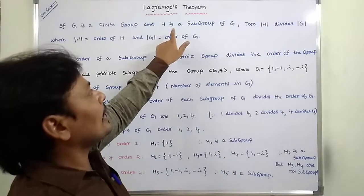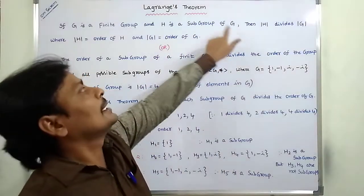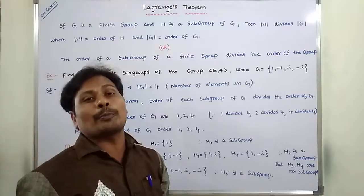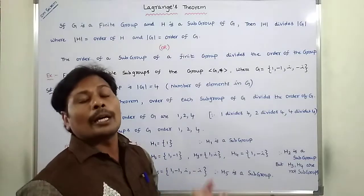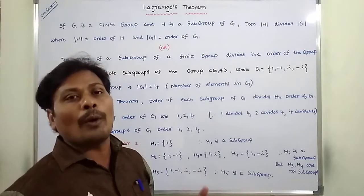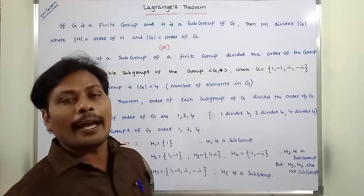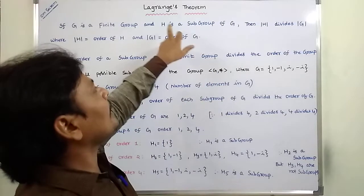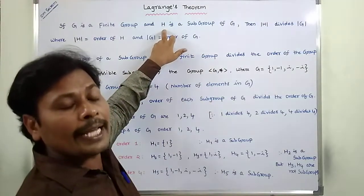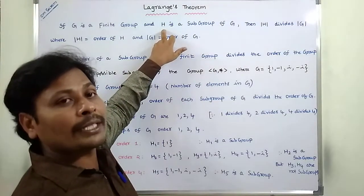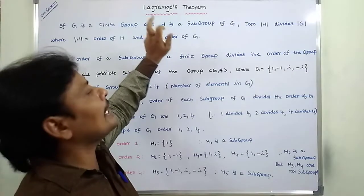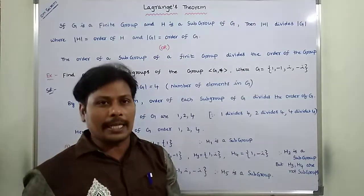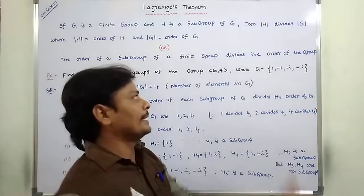H is a subgroup of G means H satisfies these four properties: closure, associative, identity, and inverse property. Whenever H satisfies these four properties, hence we can say that H is a subgroup of G.